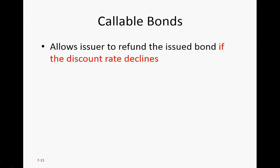The next subject is callable bonds. Callable bonds allow the issuer to refund the bond if the discount rate declines. You need to remember this financial rule: if the interest rate goes down, people want to refinance their debt. That happens in the mortgage market — if you're looking at a lower interest rate, you'll probably want to replace the current loan with another loan that has a lower interest rate.